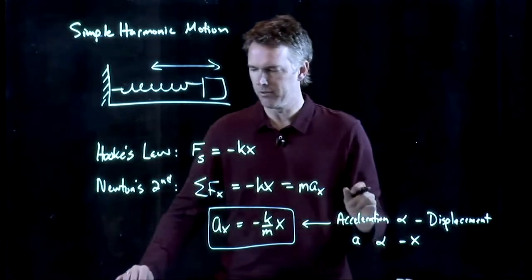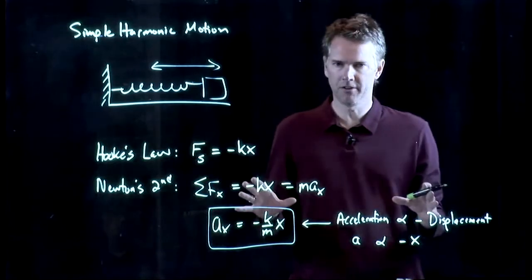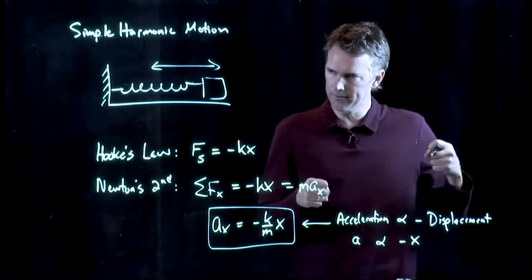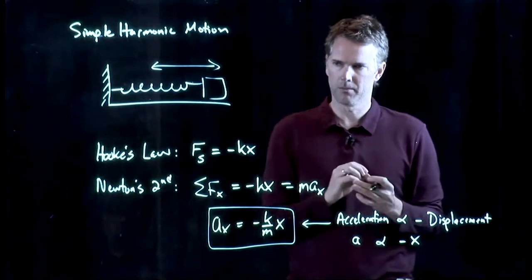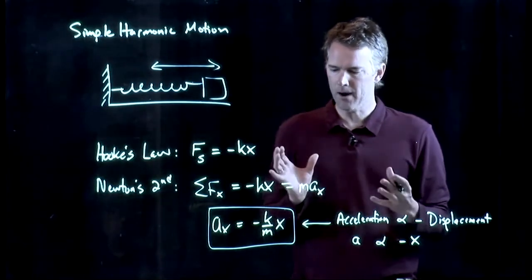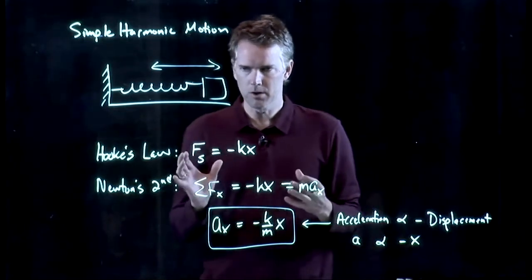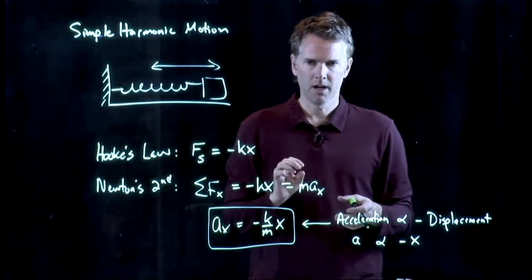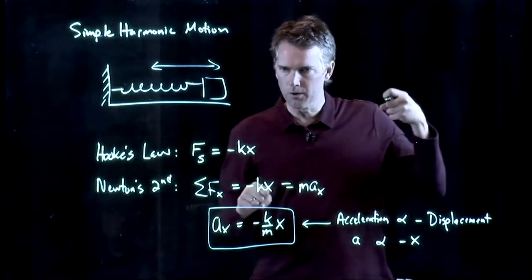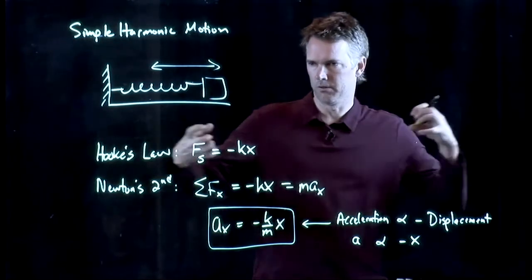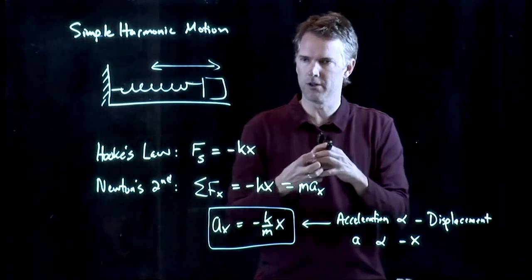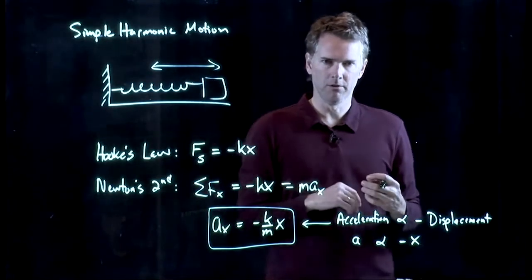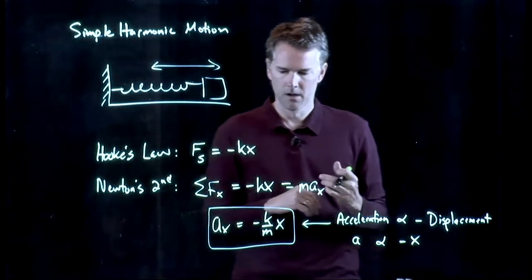And this is the basis for simple harmonic motion. Anytime you have a system where the acceleration is proportional to the negative of the displacement, you get simple harmonic motion. And this is the power of this approach because it's not just blocks on springs. It's electrons in their orbits. It's molecules. When you stretch them away from each other, they tend to rebound. And when they do that, they exhibit simple harmonic motion.